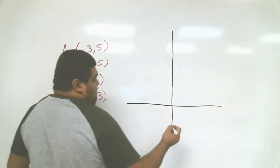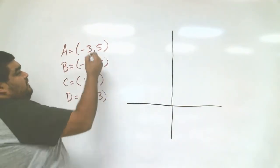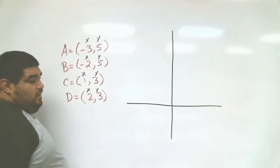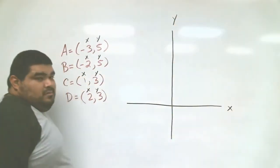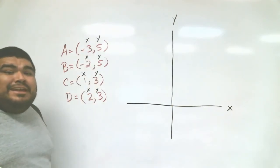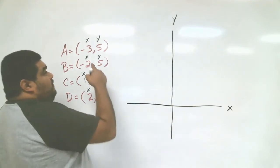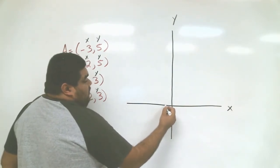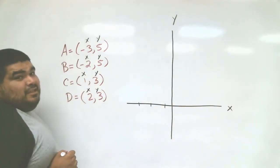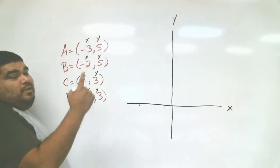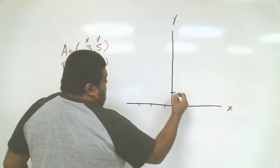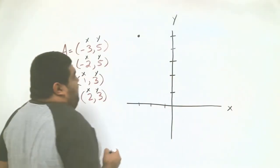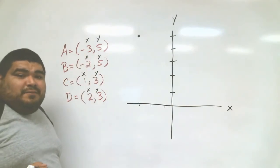Here's my graph. Let's start with our first point — remember to always label your x and y axes, it makes it a lot easier to graph. Point A is at negative 3 and 5. On the x-axis we move 3 to the left because it's negative — starting from the origin, we go 1, 2, 3, that's negative 3. Then we go up to 5 on the y because it's positive — 1, 2, 3, 4, 5. So we put our dot there: negative 3, comma 5, that's our first point.